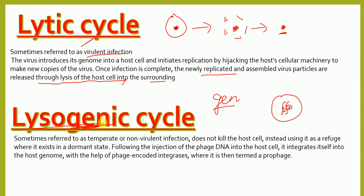'Genic' refers to genome, so that's how you remember the name. The lysogenic life cycle is sometimes referred to as a temperate or non-virulent infection. It does not kill the host cell; instead, it uses it as a refuge where it exists in a dormant state following the injection of the viral DNA into the host cell.